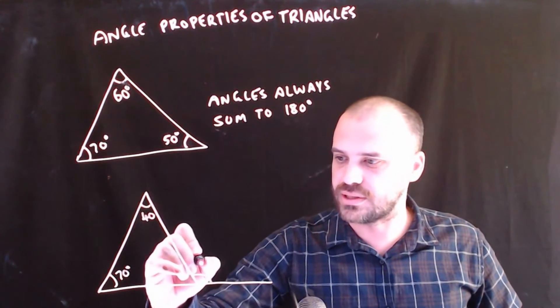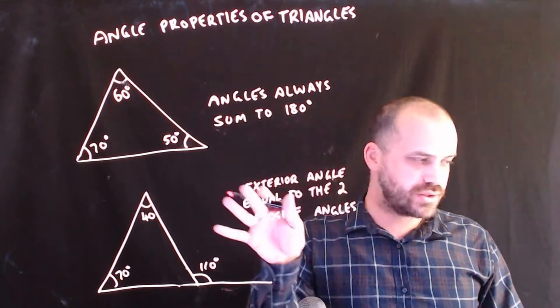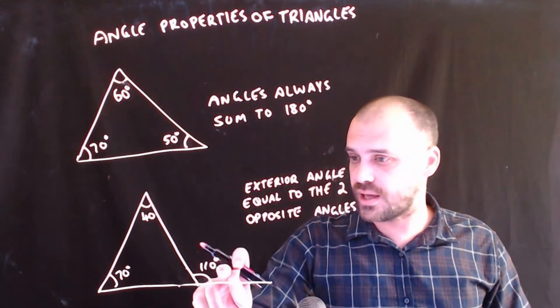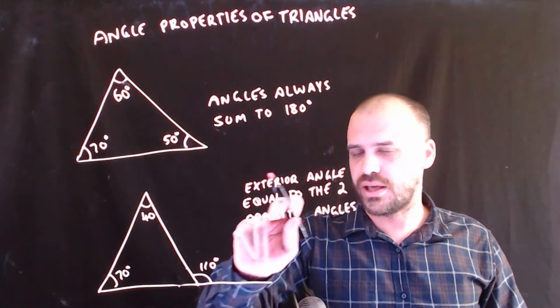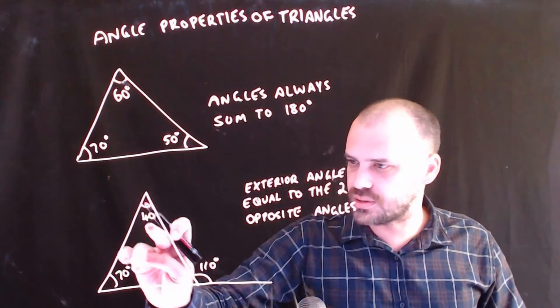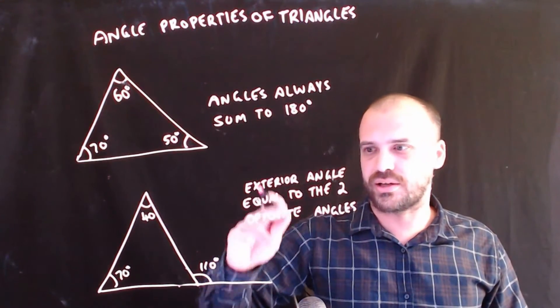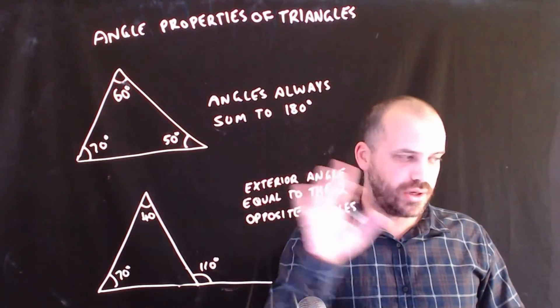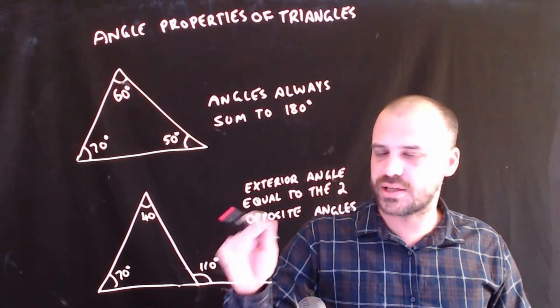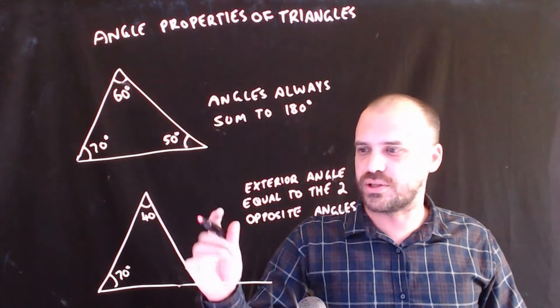So, this can be stated as the exterior angle is equal to the sum of the two opposite angles. I remember being confused by this at school, so let me draw it for you a different way.